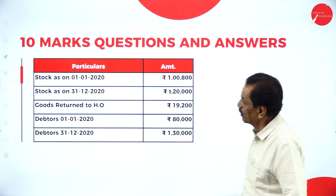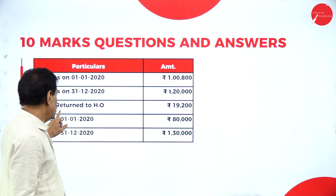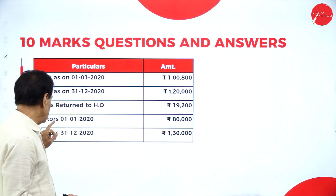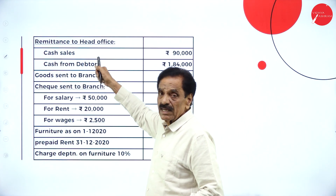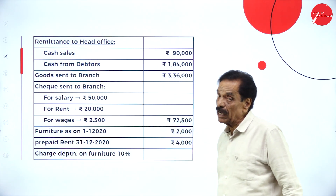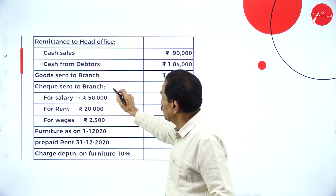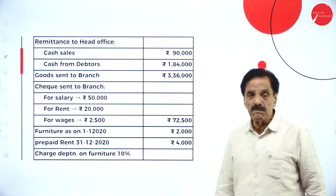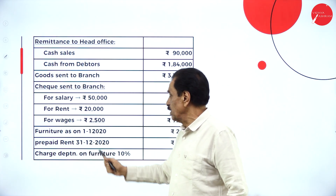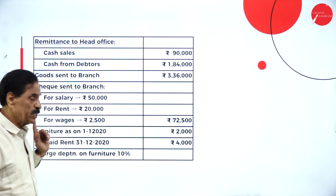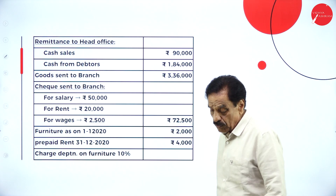We will move on to the problem now. Stock on 1st January means opening stock; stock on 31st December means closing stock. Goods returned to head office. Debtor at the beginning and debtor at the end are both given — so cash received is missing. Cash sale is there. Cash from debtor is there. By bank account. Goods sent to branch — goods sent by the head office to the branch account. Expenses paid by the head office on behalf of the branch: salary, rent, wages. Furniture at the beginning and prepaid at the end are given; furniture has been depreciated by 10%.